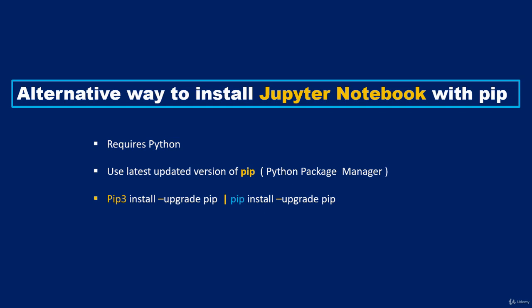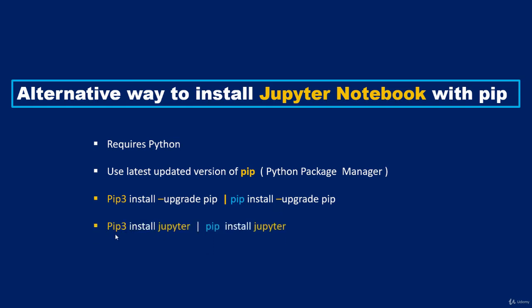To install Jupyter Notebook using pip, on a Mac you type 'pip3 install jupyter'. On Windows, type 'pip install jupyter'. On a Mac you do this in your terminal; on Windows you use the command prompt.